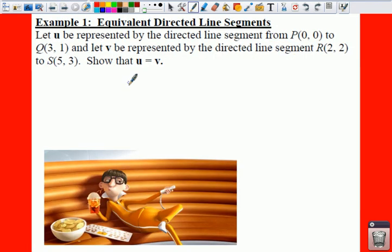Let's look at example one. What we're going to do is let U be represented by the directed line segment from P(0, 0) to Q(3, 1). So we're going to say U is equal to PQ, that's going to be from P to Q.